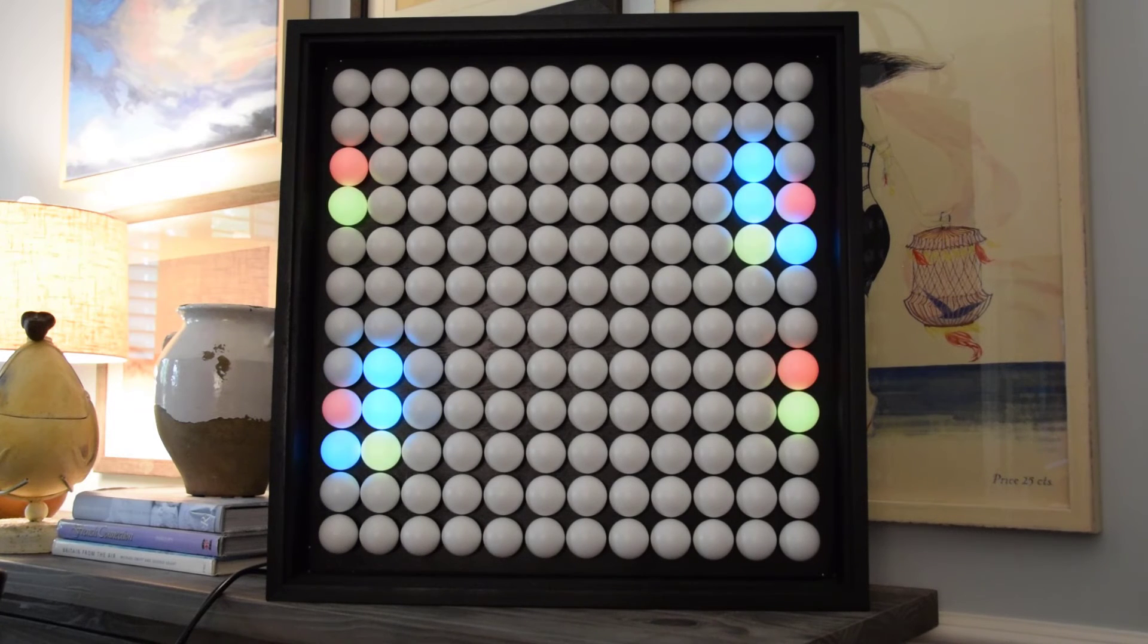If a cell is alive and it's going to stay alive, we transition from green to cyan and then from cyan back to green again.